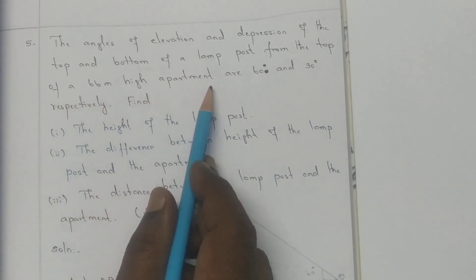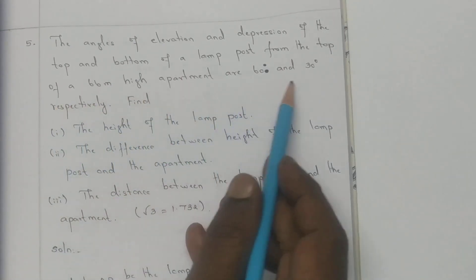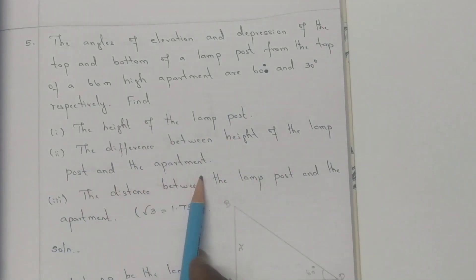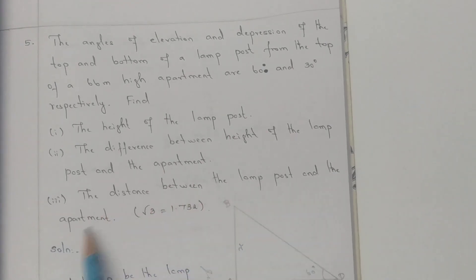Find: (i) the height of the lamp post, (ii) the difference between height of the lamp post and the apartment, (iii) the distance between the lamp post and the apartment. The given value is root 3 equals 1.732.